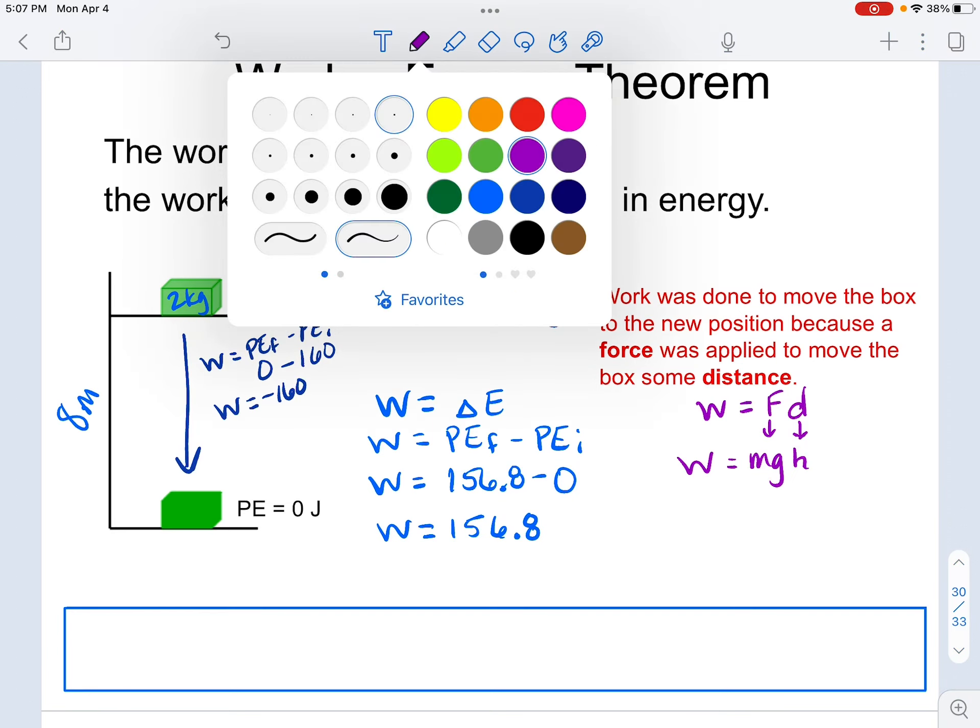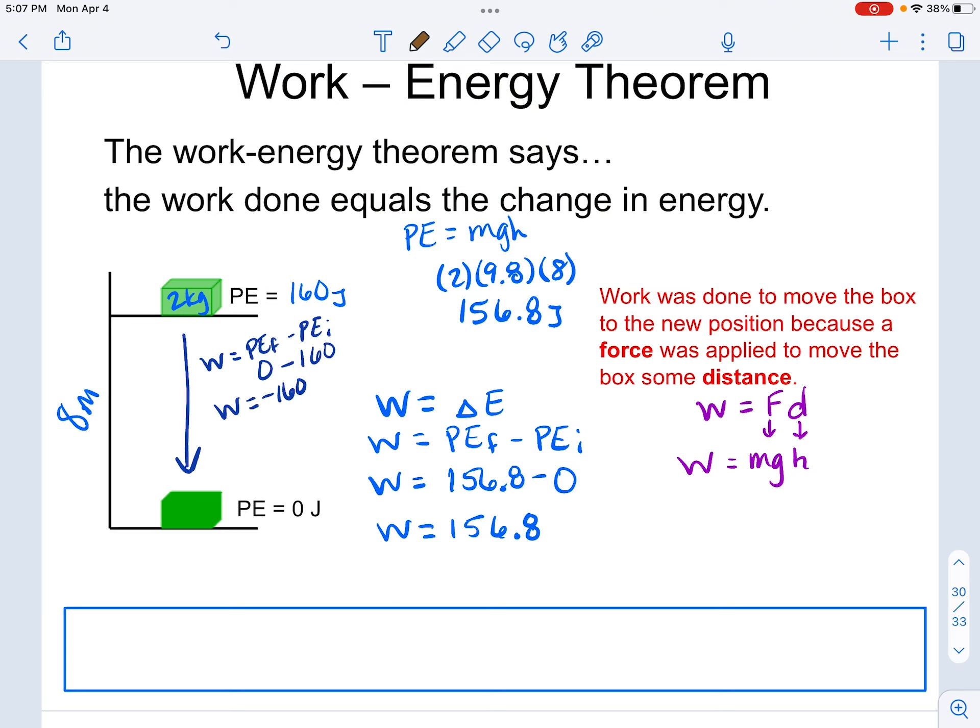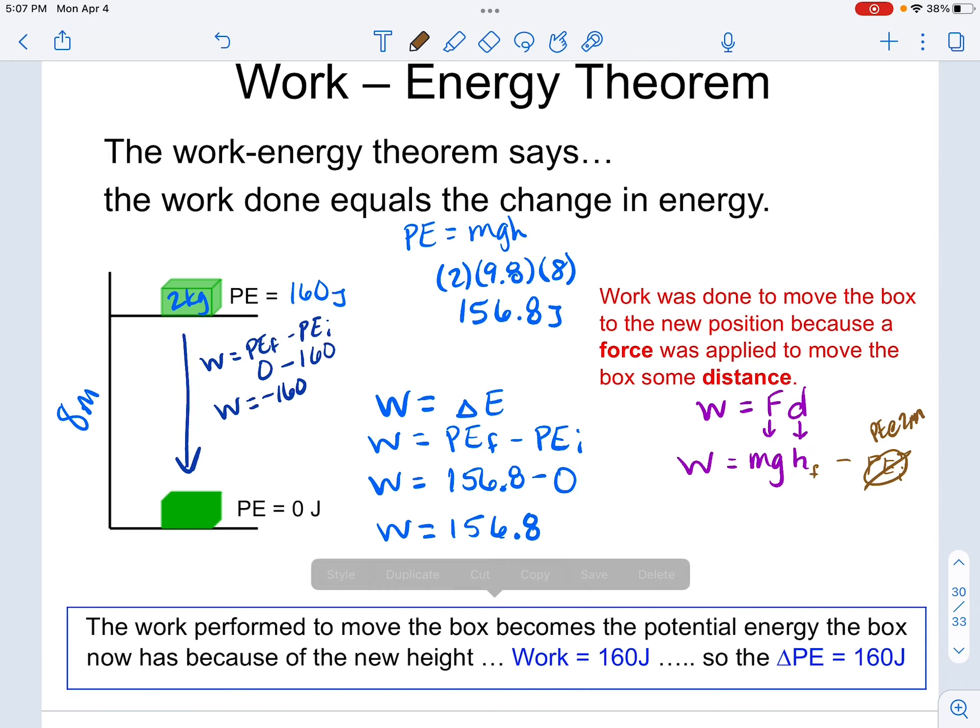So this ends up being a true statement because in this case, my final height would have been the 8 meters where my initial potential energy would have been zero. If I had an object that was maybe on a shelf that was already 2 meters high, I would need to figure out what that potential energy at 2 meters was, and I would subtract that as the initial. So here's the idea. Work is equal to the change in energy. So for this example, I performed 160 joules of work on the box to raise it from the floor to the shelf. So this means the box experienced a change in energy of 160 joules.